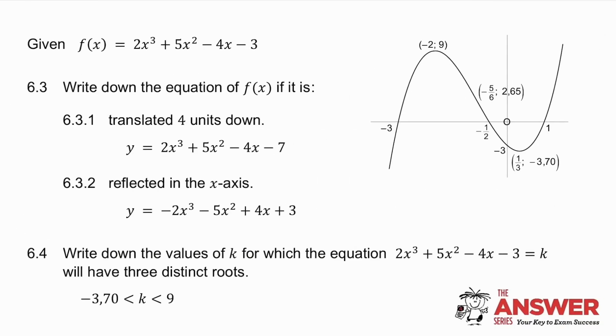In 6.3, they ask you to determine the equation of f(x), firstly, if it's translated four units down. Now if I translate my graph four units down, the shape of the graph doesn't change at all. So your a, b, and c values do not change. The whole graph is shifted down four units, so what does my equation become? Well, instead of having minus 3 on the end, it has minus 7 on the end.